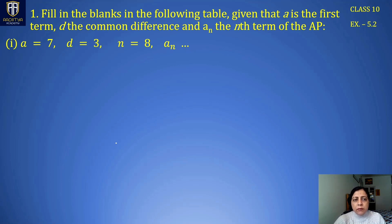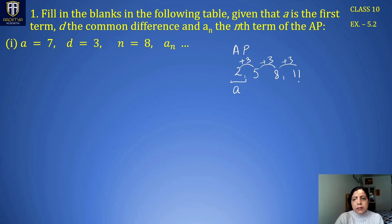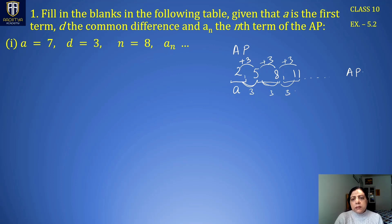An arithmetic sequence or arithmetic progression is a sequence or list of numbers obtained by adding a common difference to every existing term. For example, starting with 2 as the first term and adding 3 each time gives 2, 5, 8, 11. The difference between two consecutive terms is always the same in an AP. This is the basic definition of an AP.